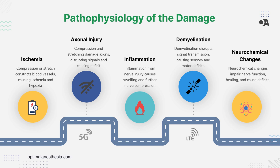Next, we have demyelination. Many nerves are covered by a protective sheath called myelin, which helps speed up signal transmission. When this sheath gets damaged through compression, ischemia, or inflammation, the nerve's ability to send signals quickly and efficiently is compromised. This demyelination slows down or blocks nerve impulses, leading to symptoms like numbness and weakness. Finally, nerve injuries can also cause neurochemical changes, disrupting how nerves communicate, impairing signal transmission to muscles, and making self-repair harder — sometimes leading to chronic pain or long-term functional problems.